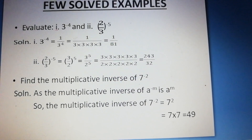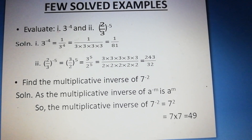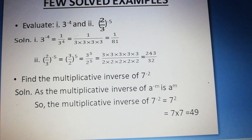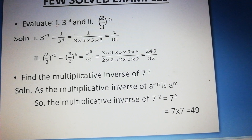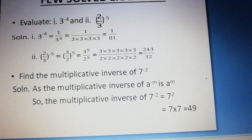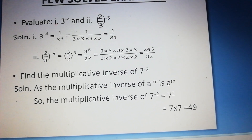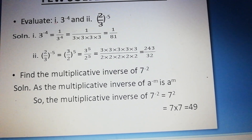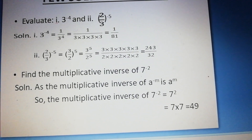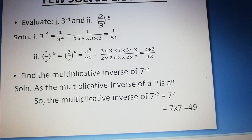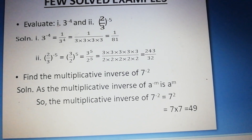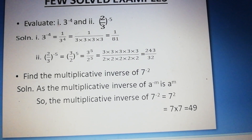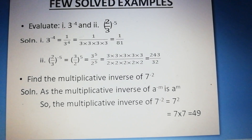Next — find the multiplicative inverse of 7 to the power minus 2. We know that the multiplicative inverse of a to the power minus m is a to the power m. So the multiplicative inverse of 7 to the power minus 2 is equal to 7 to the power 2, which is equal to 49.